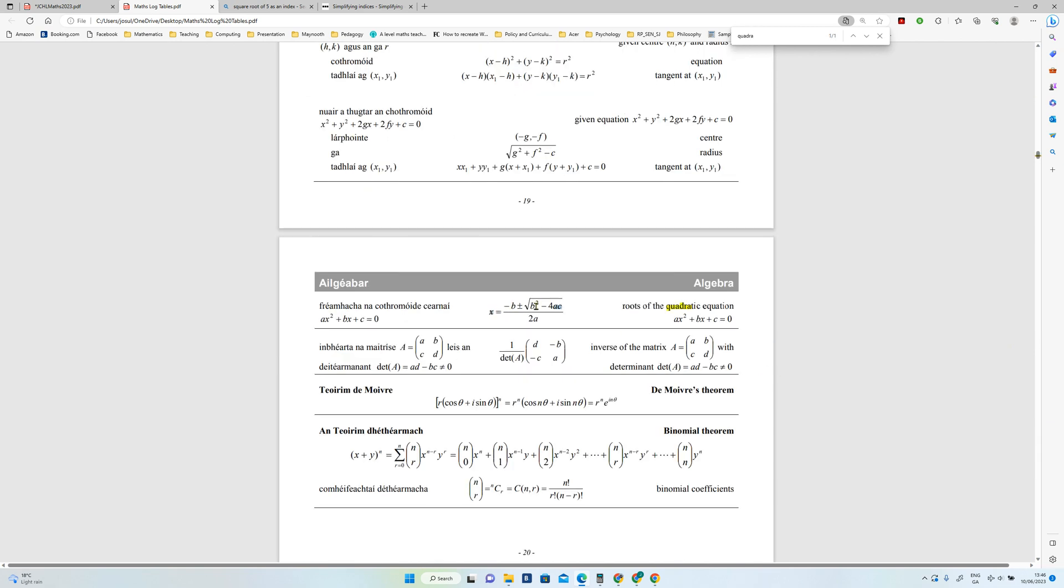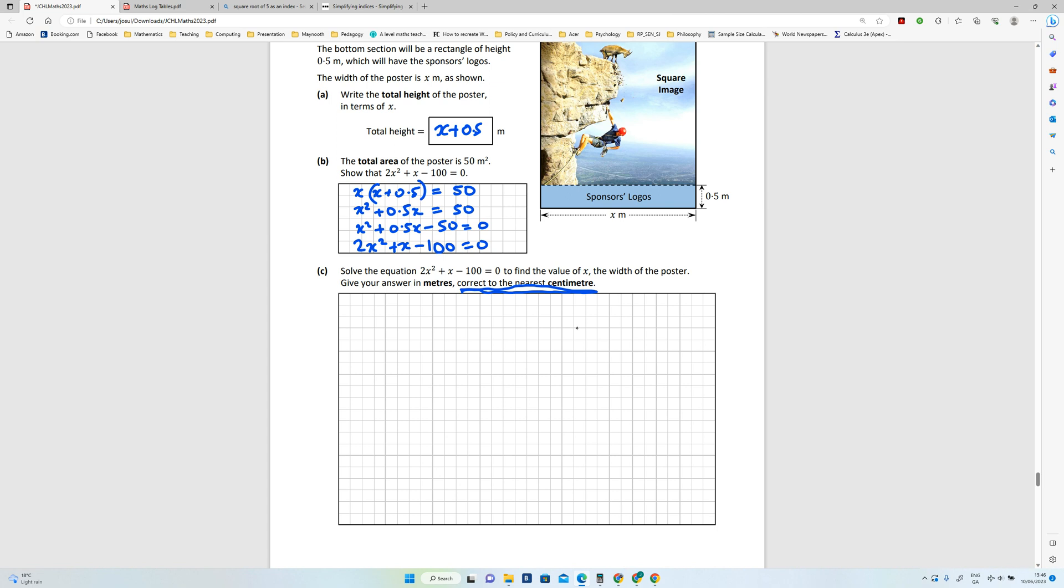Okay, so here's your formula. This is the one you need to use. So minus b plus or minus square root of b squared... oh sorry, b squared... all over 2a.